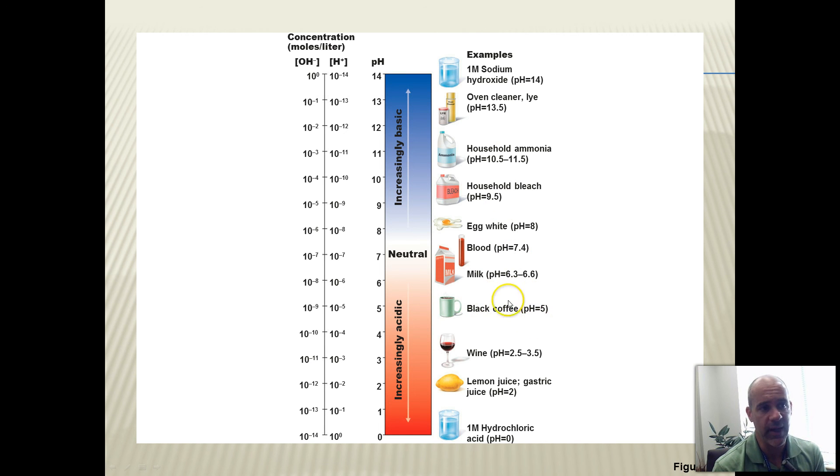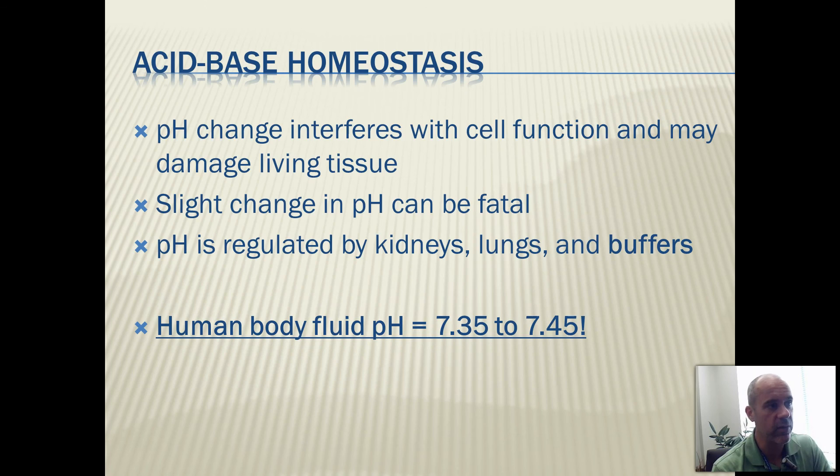Our bodies are very good at maintaining pH homeostasis if you're healthy. Obviously, because I know I drink coffee all day. That's pH 5. So I'm swallowing all this pH 5 stuff all day. You would think my body fluids would be right around pH 5. I drink so much coffee, but our bodies are so good at controlling pH that that doesn't happen. My body fluid pH stays between 7.35 and 7.45 just like everybody else's. You'll learn a lot more about how your body controls pH when you get to biology 202. That's a big topic in that class. When you get to nursing, if you're going into nursing, that's a huge topic in nursing.